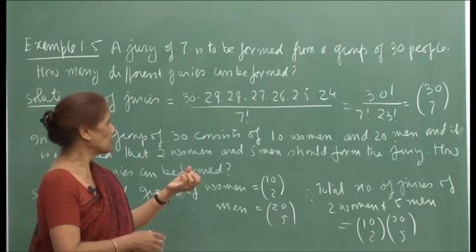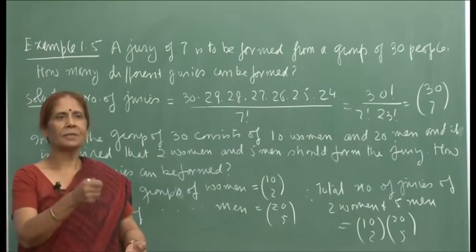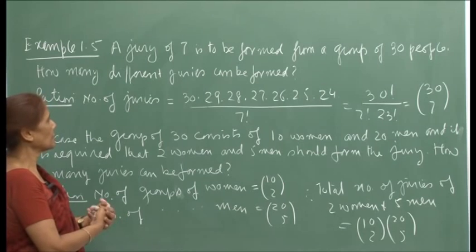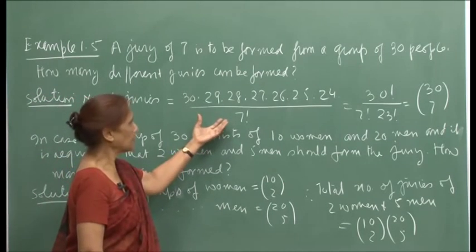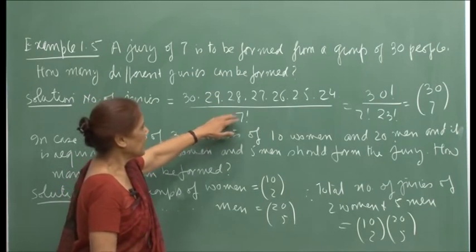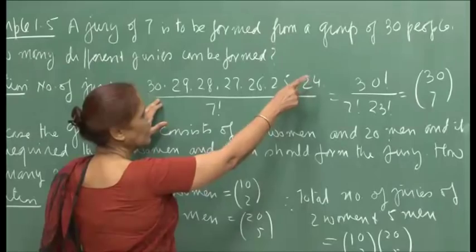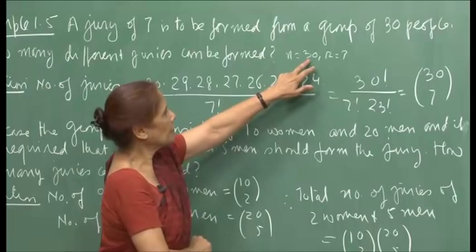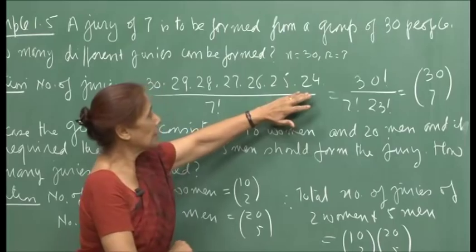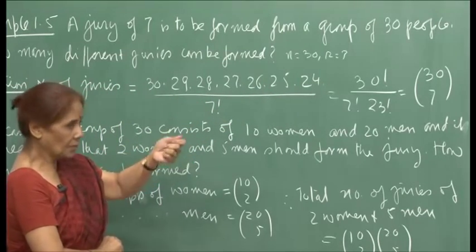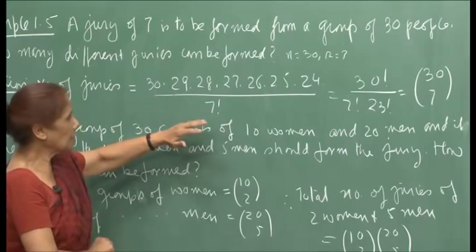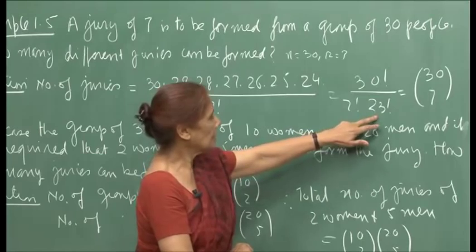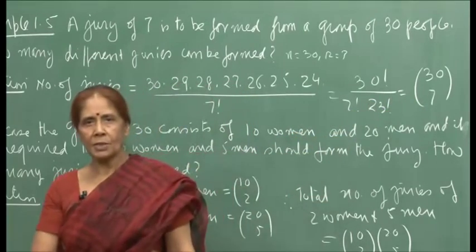The order of selection is not important — it is just the subset of 7 people that matters. Therefore the total number of juries is 30! / (7! × 23!), which by our notation is 30 choose 7.